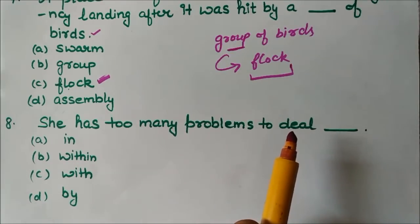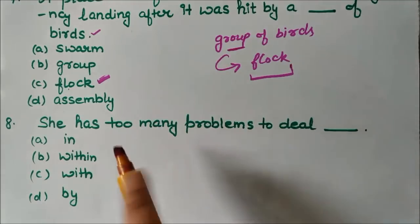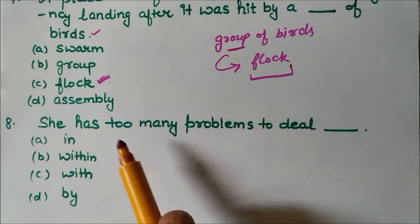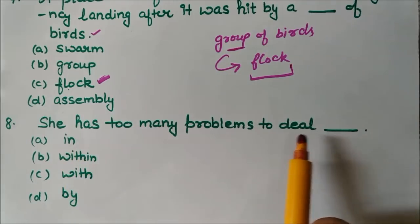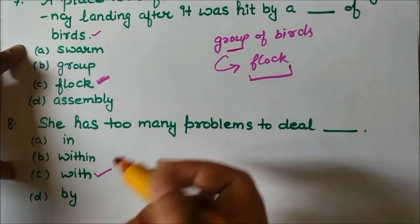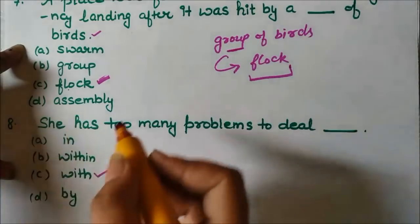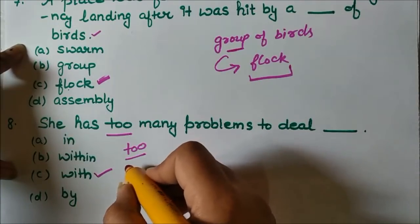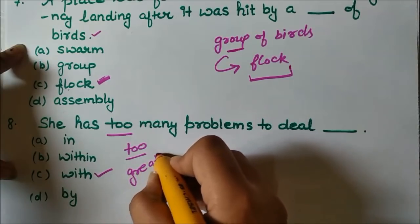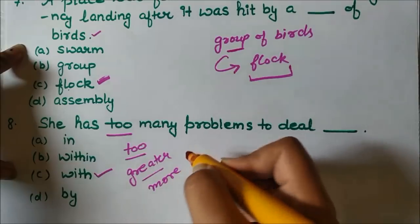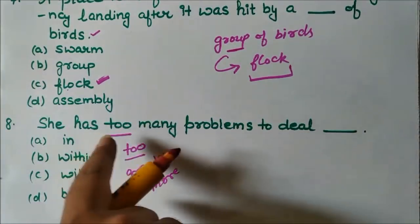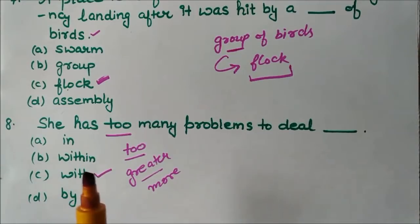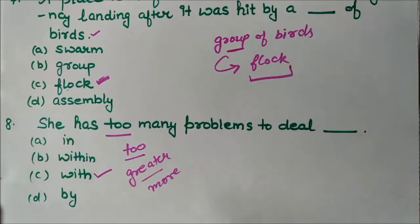Next question: 'She has too many problems to deal ___.' When we deal, we deal with something, so the answer is 'deal with.' Also note: 'too' (T-O-O) means more, greater in number — used in a negative sense, meaning so much that it is very difficult to handle. Answer: 'She has too many problems to deal with.'